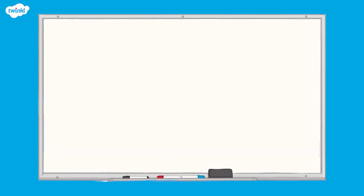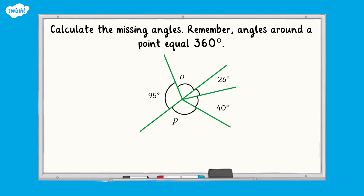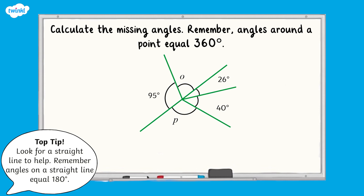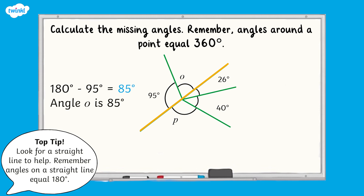What about when there is more than one missing angle? Let's take a look together. It doesn't matter which angle you calculate first. For this type of question it can be really helpful to remember that angles on a straight line equal 180 degrees. Look for a straight line in the diagram to help. For that reason, let's work out angle O first. 180 degrees subtract 95 degrees is equal to 85 degrees, so angle O is 85 degrees.